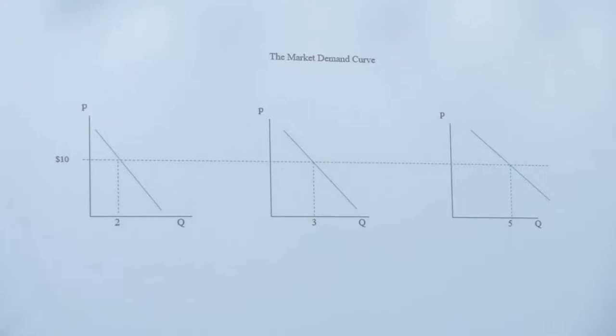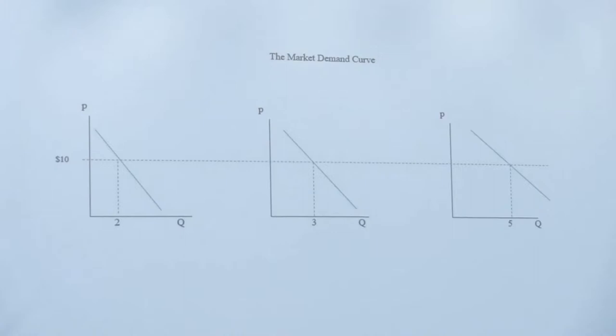The answer is no — not without a further assumption. Utility functions are ordinal and technically cannot be added together to get anything meaningful. The only way market consumer surplus can have any meaning is to assume that a dollar for each consumer measures the same amount of utility — that a dollar is a dollar for everybody.